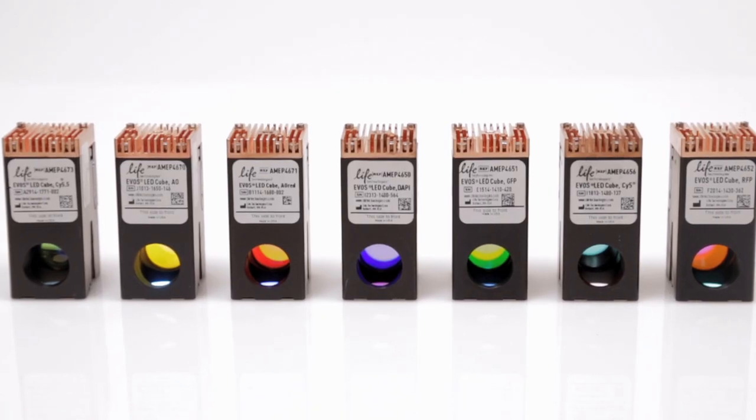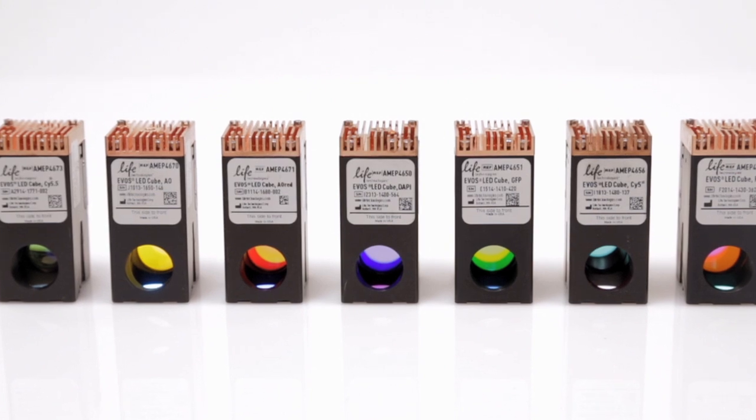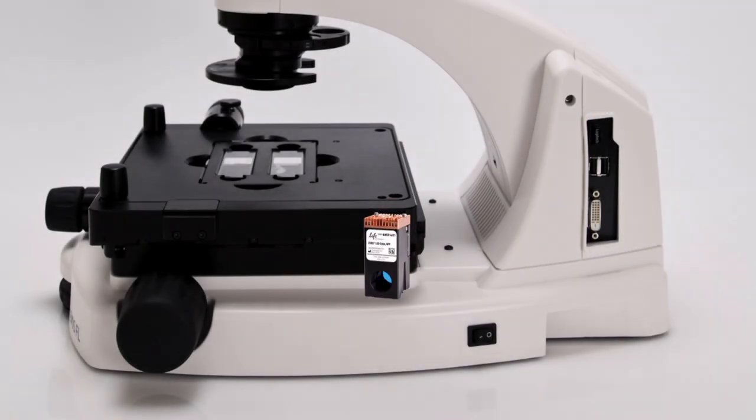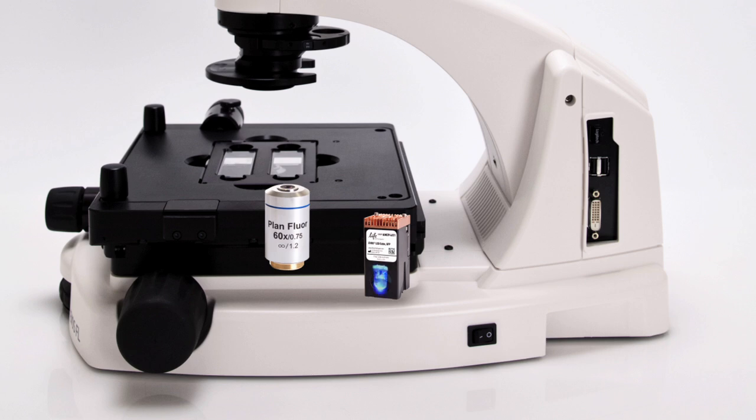EVOS light cubes, which contain both the LED excitation source and emission filters, are located directly below the sample, creating a short fluorescent light path. This efficient light path helps increase collection of the fluorescent signal and reduces the effects of photobleaching.